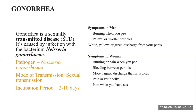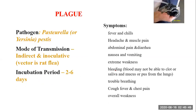Another disease related to bacteria is called plague. Its pathogen name is Pasteurella pestis, and the mode of transmission is indirect and inoculated. It can also be transmitted through breath. Incubation period is 3 to 6 days. Symptoms include fever and chills, headache and muscle pain, abdominal pain and diarrhea, nausea and vomiting, extreme weakness, and bleeding. Blood may not be able to clot, and trouble in breathing, cough, fever, and chest pain are also experienced.